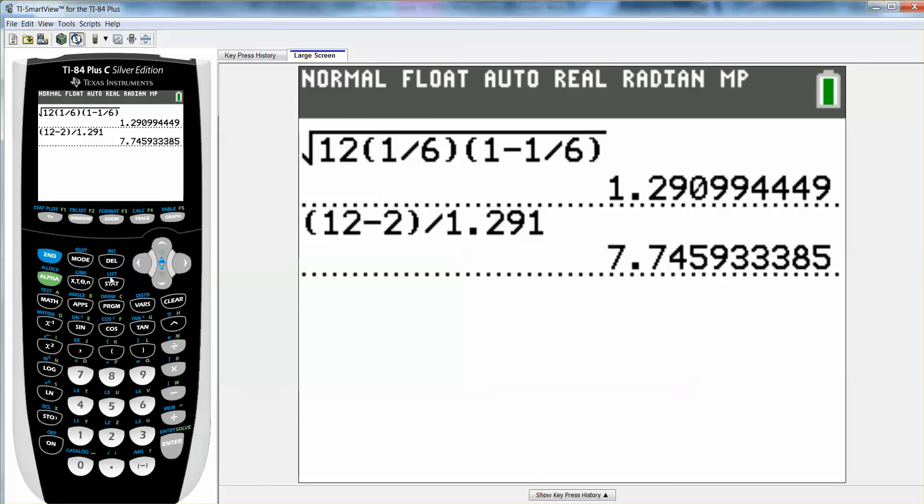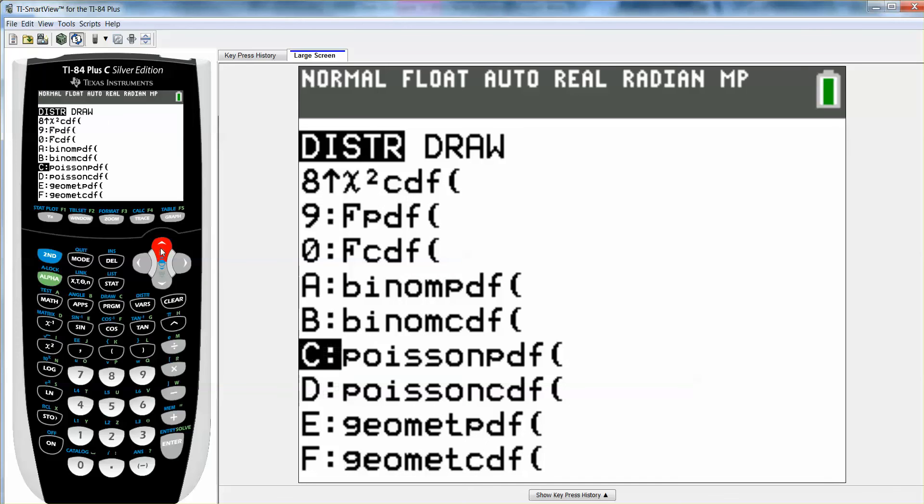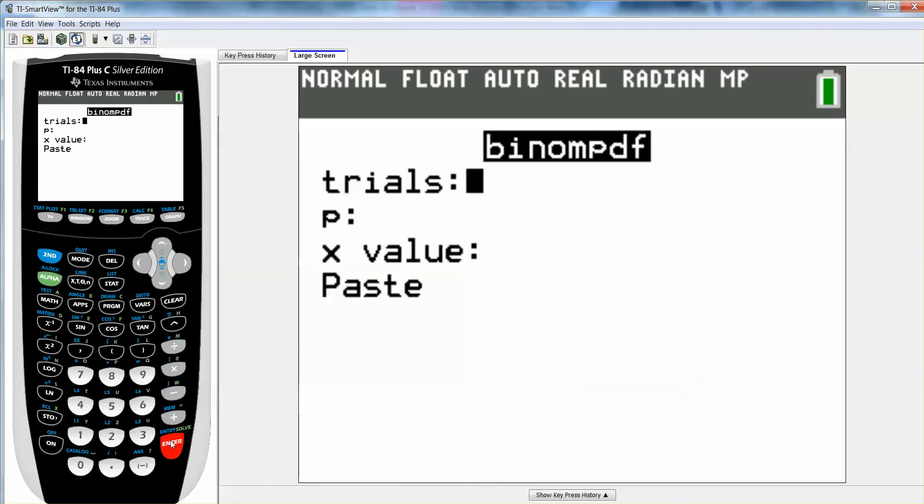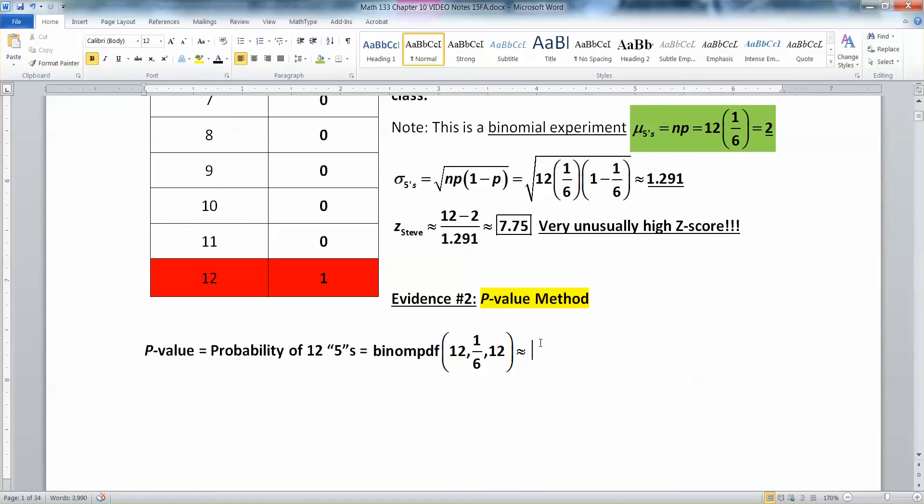So let me grab the calculator. It's been a while. It's in the distribution menu. Remember, that's where all the probability distributions are. And binomial PDF is actually letter A. I had 12 trials. I have a 1 out of 6 chance. And I want the probability of exactly 12, because that's what Steve got. All right. That's scientific notation. Don't lose the E over here. That's times 10 to the negative 10. So that means I have to move the decimal point 10 spots to the left.